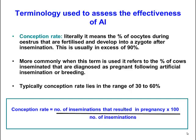Typically, conception rates lie in the range of 30 to 60%, but it's quite variable depending on a number of circumstances. To calculate conception rate in this sense, it's the number of inseminations that result in a pregnancy divided by the number of animals that were inseminated, multiplied by 100. That is the standard way in which the term conception rate is used.